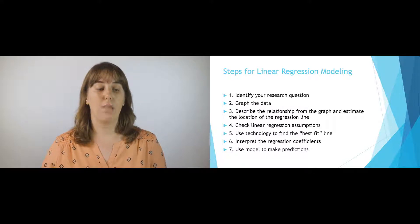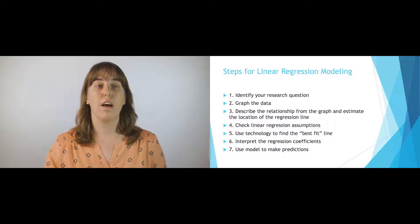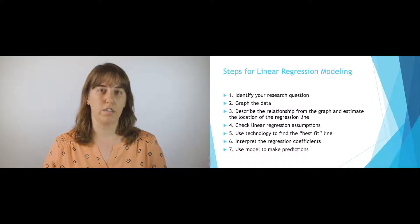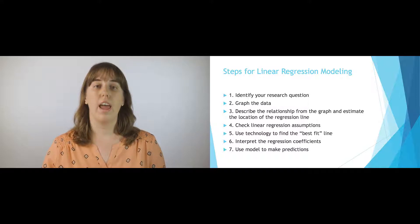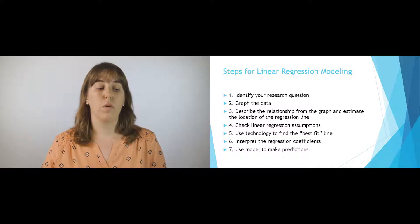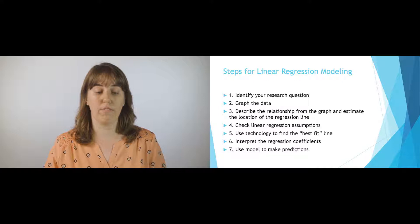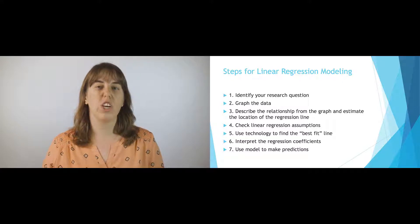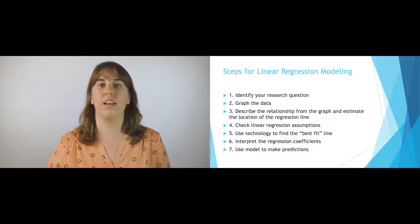The steps for linear regression are seven steps outlined here on the slides. These steps are important to make sure we hit all the boxes and don't forget anything. Our first step is to identify our research question — we never want to go straight to creating a linear model without figuring out what we want to do. Then we graph the data; we always want a picture of the data to see what's going on, as it can sometimes inform or alter our research question. Then we describe the relationship from the graph and estimate the location of the linear regression line to get a sense of what we'd expect before running it on the computer.